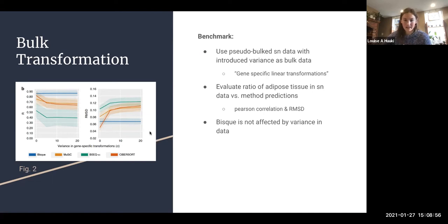I don't quite understand all the math behind that, but things get more complex along the x-axis, more different than just the single nucleus data. They run the different methods and get their cell proportion estimates. What we're looking at here is the correlation of ratio of adipose tissue in the single nucleus data versus the method prediction data. They're showing Pearson correlation and RMSD. Basically Bisque in bulk is unmoved by that increase in variation where the other methods struggle the more different the bulk data is from the single nucleus data.